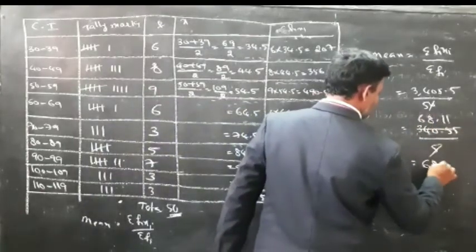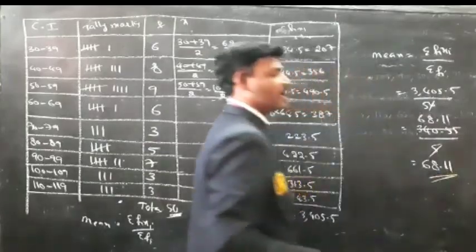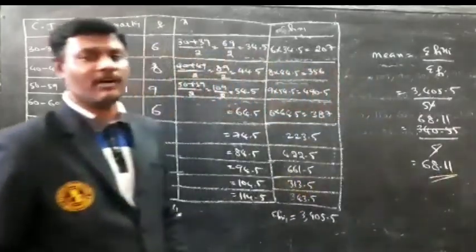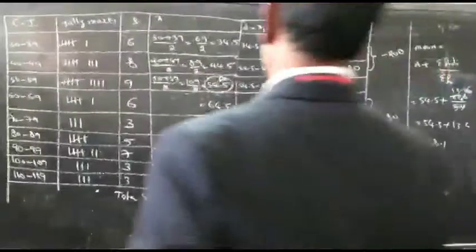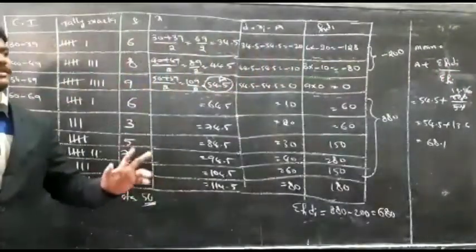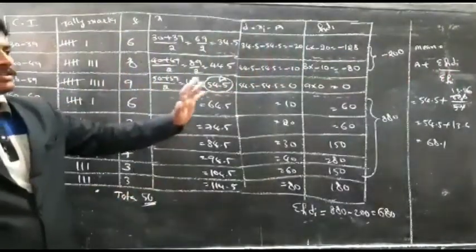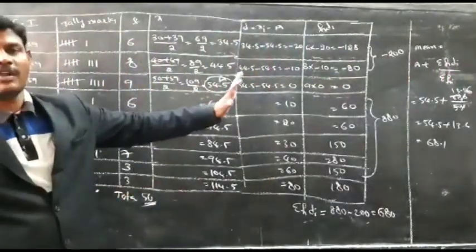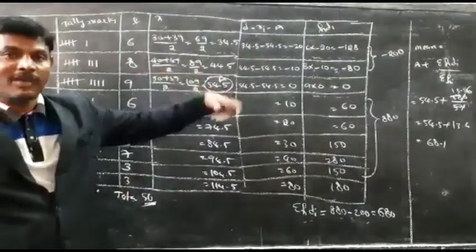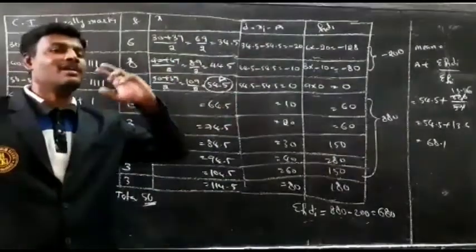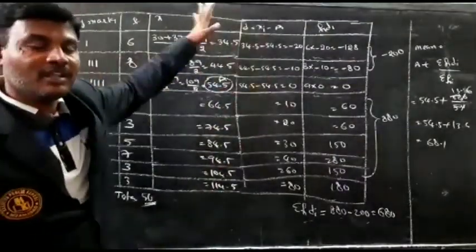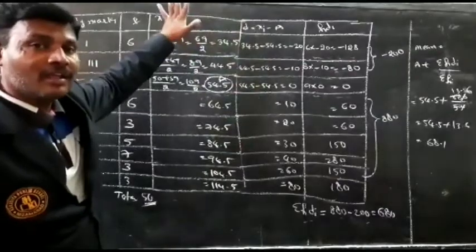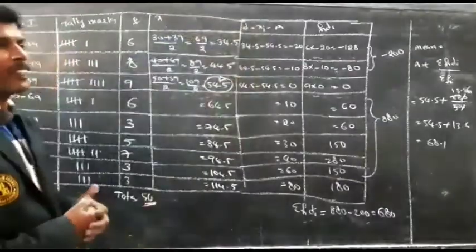The mean of the given data is 68.11. Now we need to check the mean by using the deviation method. You have to find the mean in this table using the deviation method as well.